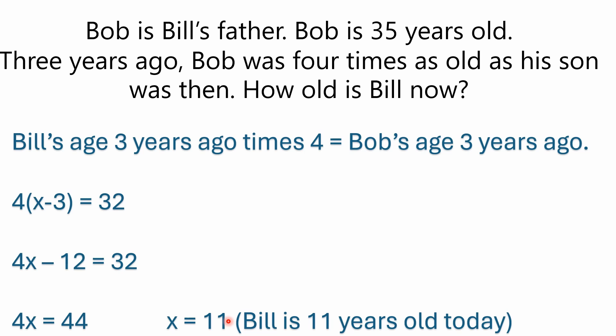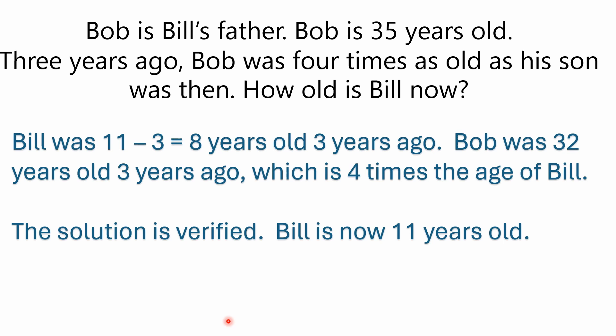If Bill is 11 years old today, he would have been eight years old three years ago. Bill was eight years old three years ago, and that makes Bob 32 years old three years ago. Eight times four is 32 — that verifies our solution. Three years ago Bob was 32 and his son was eight, so the father was four times as old as his son. Today Bob is 35 and his son Bill is 11.